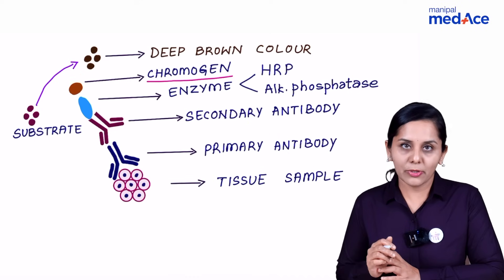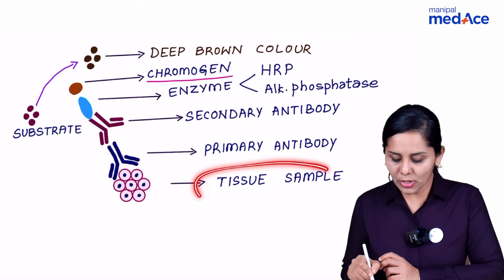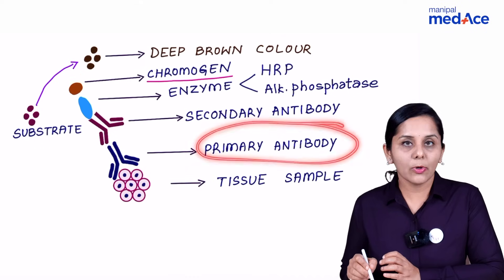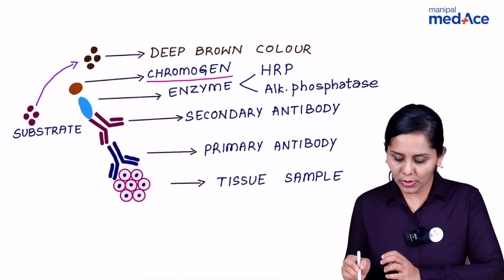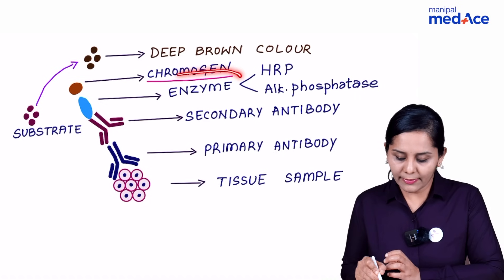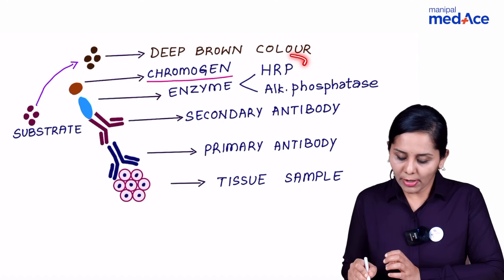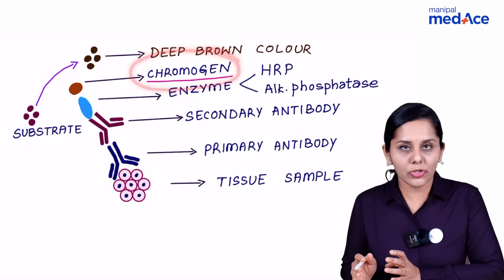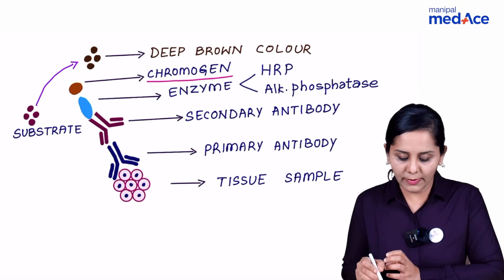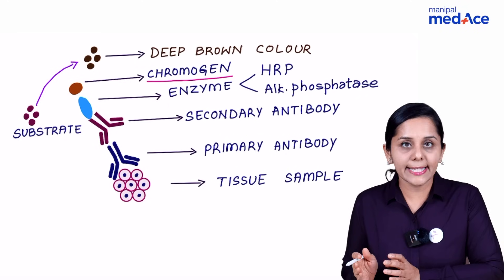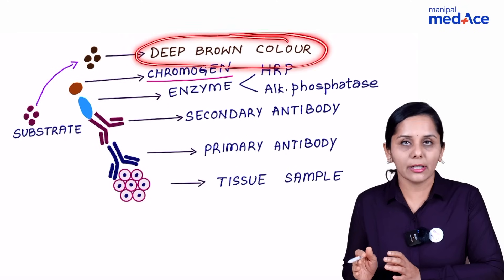The principle of immunohistochemistry is: we have a tissue sample to which we raise a primary antibody, and then there is an anti-antibody called a secondary antibody, which is usually tagged with an enzyme — that can be horseradish peroxidase or alkaline phosphatase — which also has a chromogen. We employ a chromogen which, upon reacting with the substrate in the presence of the enzyme, imparts a particular color.